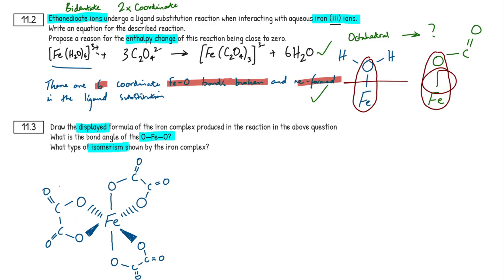We've drawn the complex, but there's one thing missing — as always, note that it's a complex with square brackets and show the formal charge, which is 3−. Interestingly, AQA's mark scheme states 'ignore absence of square brackets and ignore all charges even if wrong' — I assume because they only asked for the displayed formula — but please add them in because it's really important and that's how we learn it.